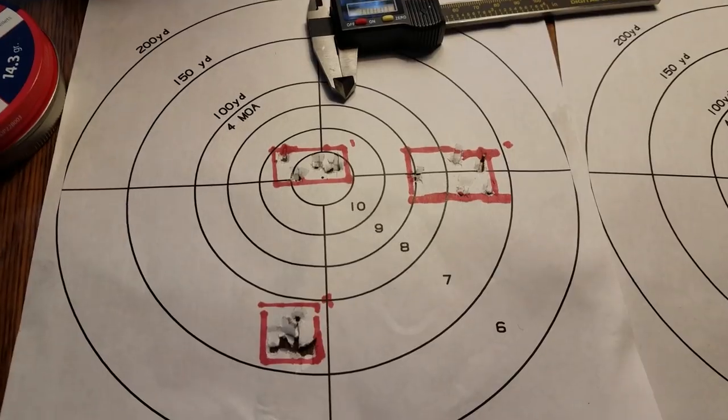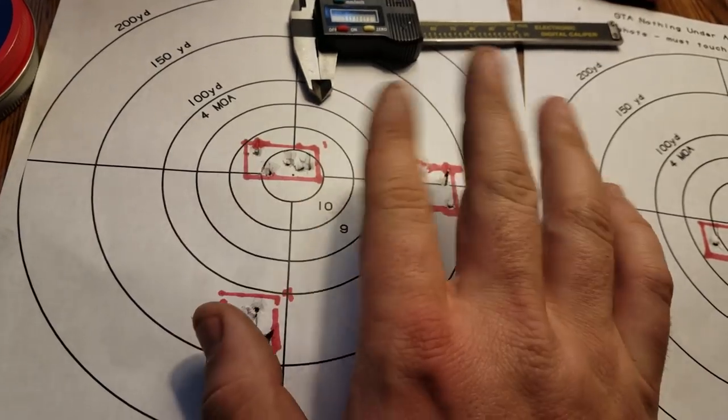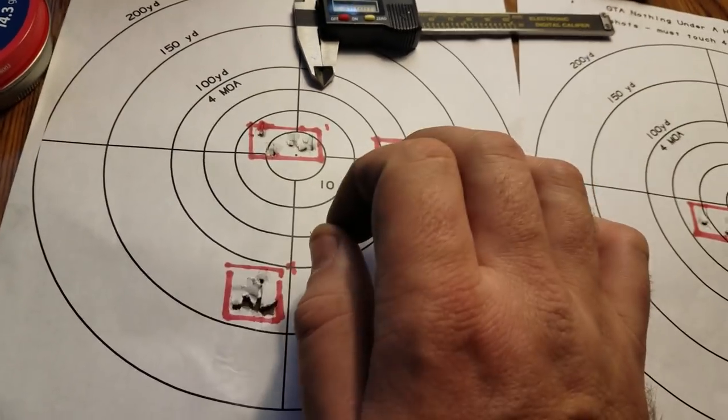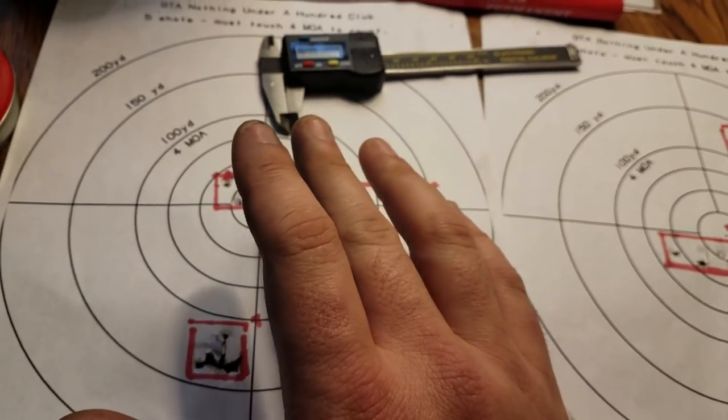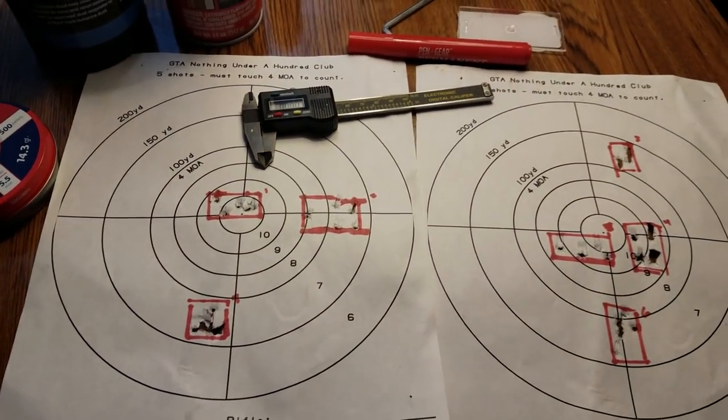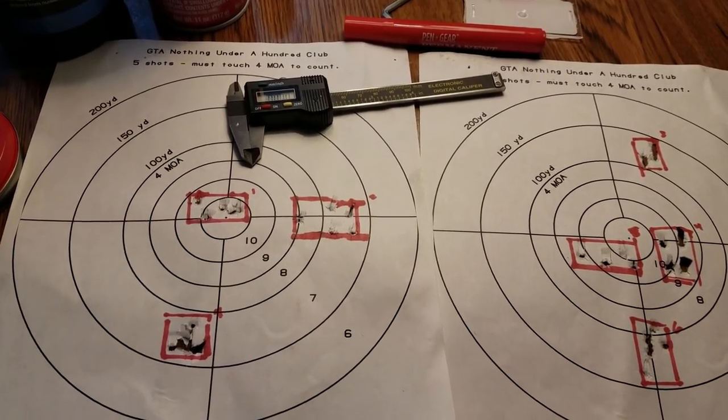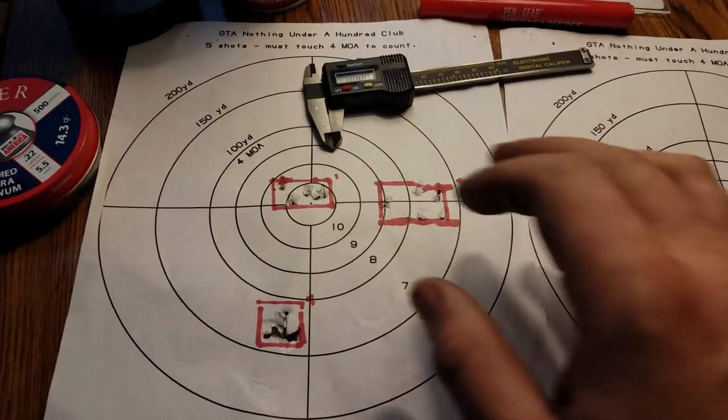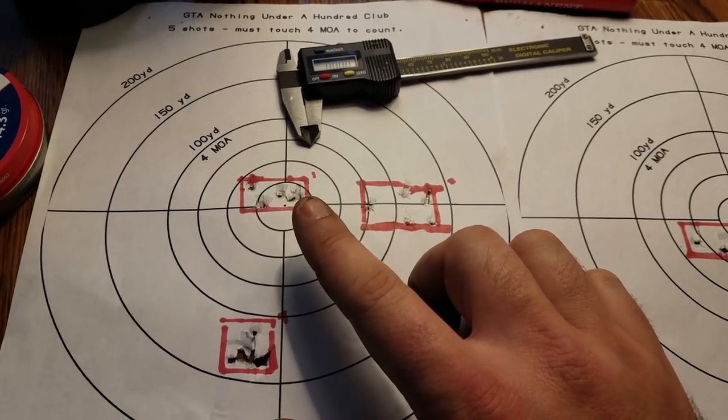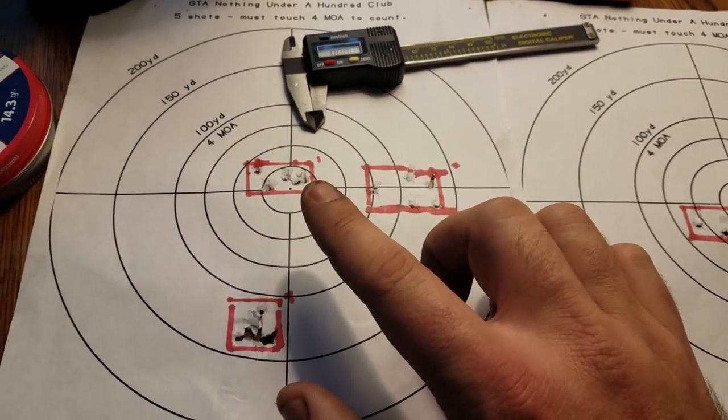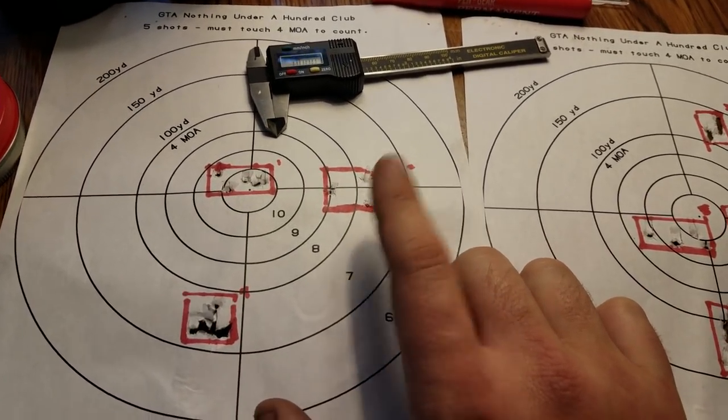To start off as a test, just to see if there's any change, this is the group, the standard group that I shot. First group without anything done, factory gun out of the box, no tuning in this video. I didn't do any tuning because a lot of people don't know how to do it. I didn't want to make it seem like this gun is lights out. This group is just shot out of the gun the way it was, barrel fouled out, never been cleaned.